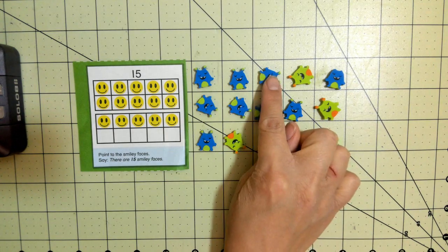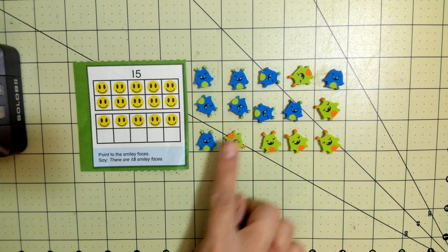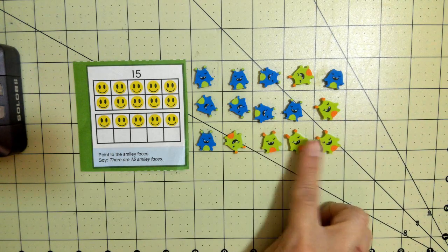So let's count just to make sure I have 15. 1, 2, 3, 4, 5, 6, 7, 8, 9, 10, 11, 12, 13, 14, 15.